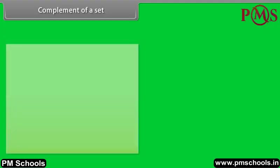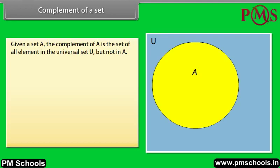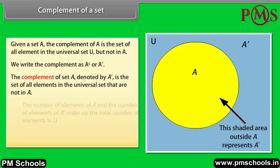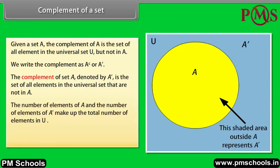Complement of a set. Given a set A, the complement of A is the set of all elements in the universal set U but not in A. We write the complement as A dash. In other words, the complement of set A, denoted by A dash, is the set of all elements in the universal set that are not in A. The shaded area outside A represents A dash. The number of elements of A and the number of elements of A dash make up the total number of elements in U. That means N(A) plus N(complement of A) is equal to N(U).